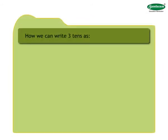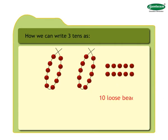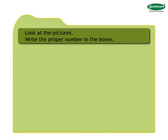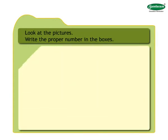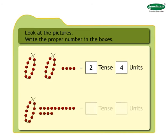Let us see how we can write three tens: there are three strings of ten beads, which equals three tens. Let us open one string — we get ten loose beads and two strings, which equals two tens ten units. Hence three tens equals two tens ten units. There are two strings of ten beads and four loose beads — two tens four units — which can be shown as one string and fourteen loose beads, one tens fourteen units. Hence two tens four units equals one tens fourteen units.